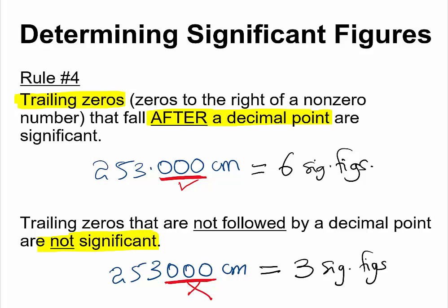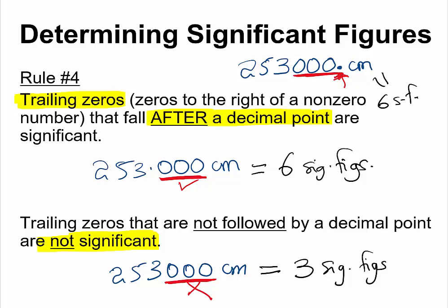But take a look at this last example: 253000. with a decimal point at the end, centimeters. This measurement will be considered six significant figures, because these trailing zeros are followed by a decimal. So if you see a decimal at the end of trailing zeros, then the trailing zeros will be considered significant.